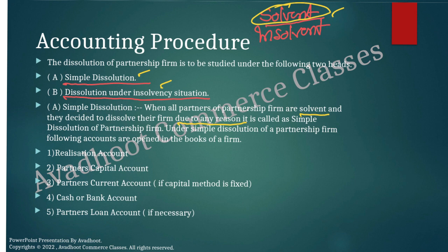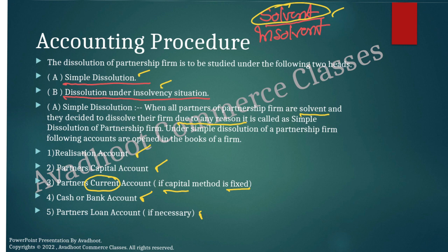Under simple dissolution, we open the following accounts in the books. In the examination, you will be given the balance sheet of a partnership firm and certain adjustments. First, we open a realization account. Then, partner's capital account — when the capital method is fluctuating; if the capital method is fixed, you open the current account of the partners. Afterwards, open the cash or bank account. If necessary, open the partner's loan account — sometimes a partner gives a loan to the firm.